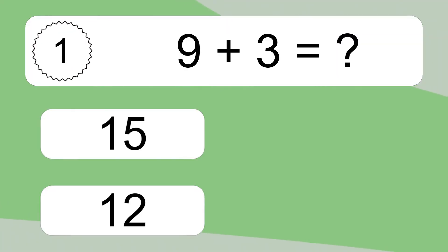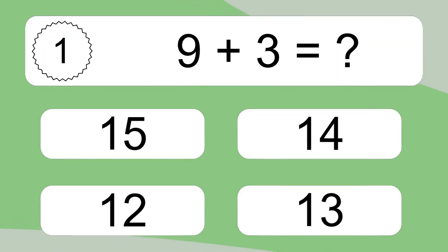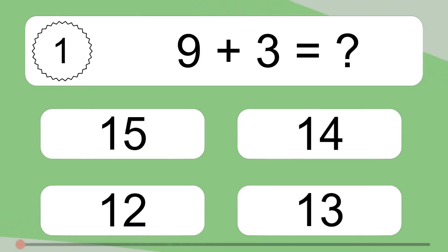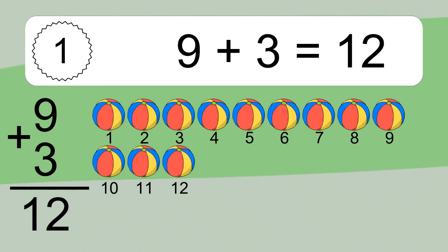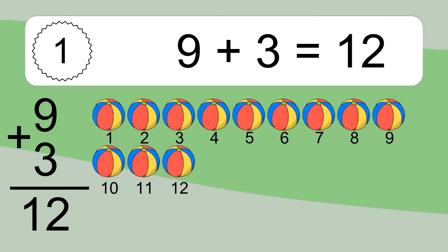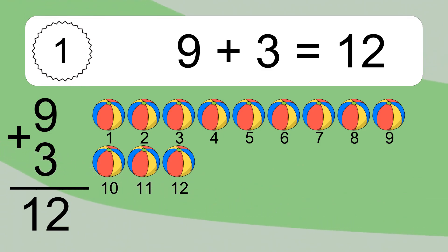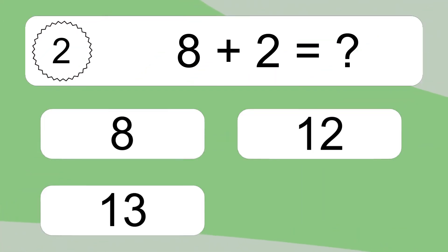9 plus 3 equals what? 9 plus 3 equals 12. Let's count it: 1, 2, 3, 4, 5, 6, 7, 8, 9, 10, 11, 12.